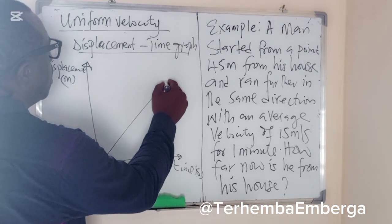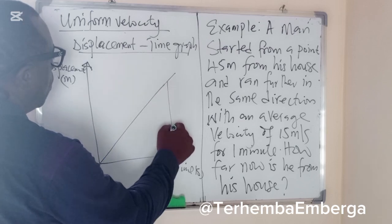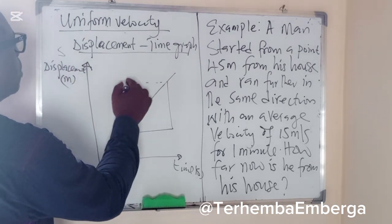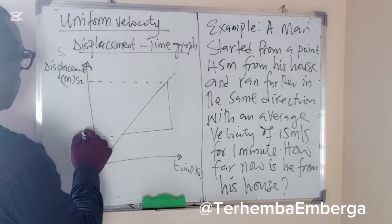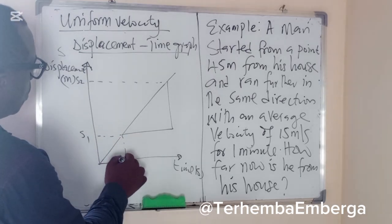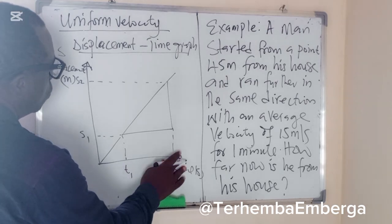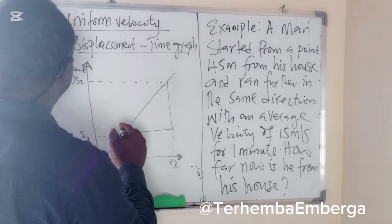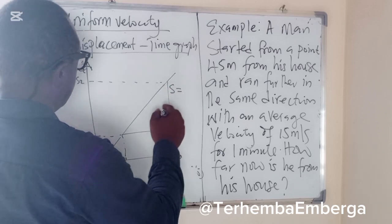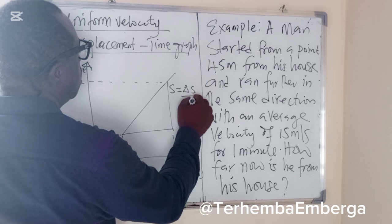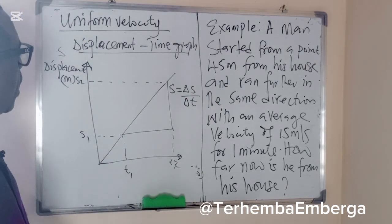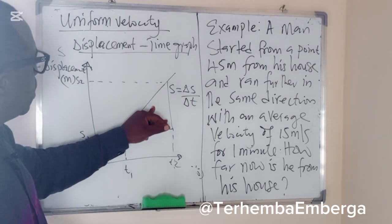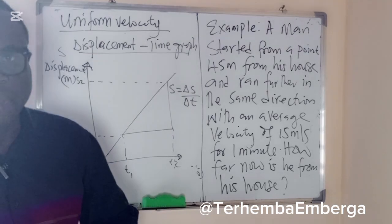Assuming this is the straight-line graph and we have the slope here. If this is displacement, this point is what we call S2 and this point is what we call S1. And from here we have T1 and T2. So the slope will be equal to the change in displacement divided by the change in time. In this context, the rate of change of displacement is constant, and then we can talk about uniform velocity.